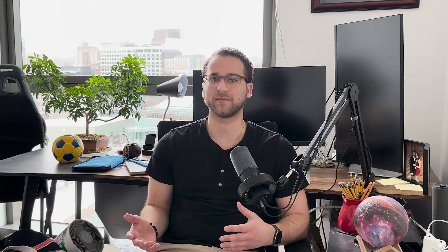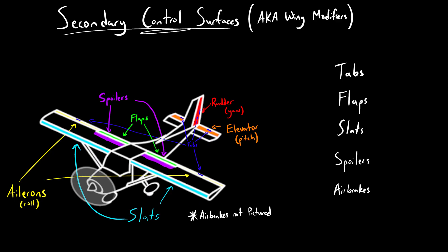These surfaces are used to modify the airflow over the control surfaces and wings, and because of this, they vary greatly from aircraft to aircraft depending on the missions they are designed for. There are five general types of secondary control surfaces: tabs, flaps, slats, spoilers, and airbrakes.